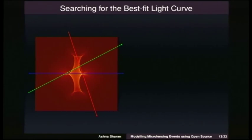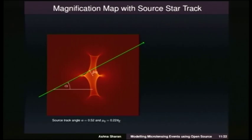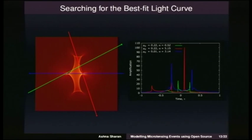Searching for the best-fit light curves involves searching thousands of these magnification maps, which means creating hundreds of thousands of light curves. This makes the process very time-consuming and computationally expensive. Here you can see just three light curves with all other parameters the same except for u_naught and alpha. Now imagine creating hundreds of thousands of light curves.